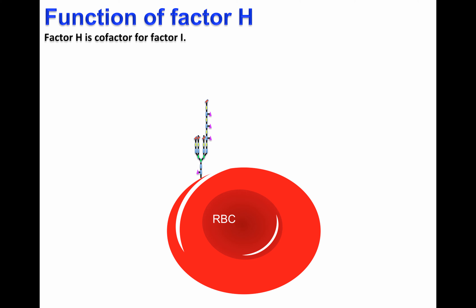In certain circumstances, the alternative pathway of the complement system may activate on the cell surface of host cells, here represented by C3B deposition. C3B deposition may lead to the formation of the membrane attack complex, which will lyse red blood cells. Therefore, we need to inactivate C3B in order to protect the red blood cells from being lysed. Factor H plays a fundamental role in protecting red blood cells.